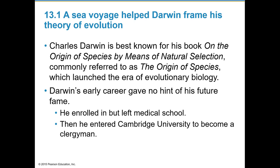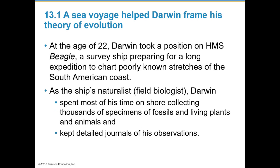Darwin's early career gave no indication of his future fame. He enrolled in and then left medical school, then entered Cambridge University to become a clergyman. At the age of 22, he took a position on the HMS Beagle, a ship preparing for a long expedition to chart very poorly known stretches of the South American coast.